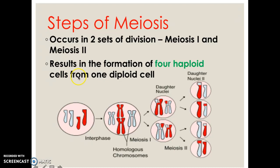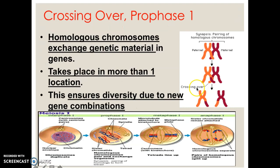You start off here — notice there are four total chromosomes in this parent cell. You go through meiosis I, then meiosis II, and you end up with four daughter cells that each have half the number of chromosomes. Notice the colors here — some cells have a mix of red and light blue, while others have just blue. That difference is something very important about meiosis: the daughter cells are going to be different from one another, which leads to more genetic variation. That is due to a process called crossing over.